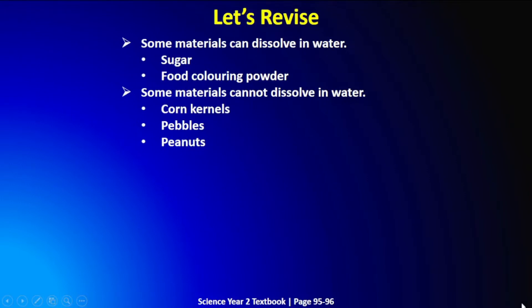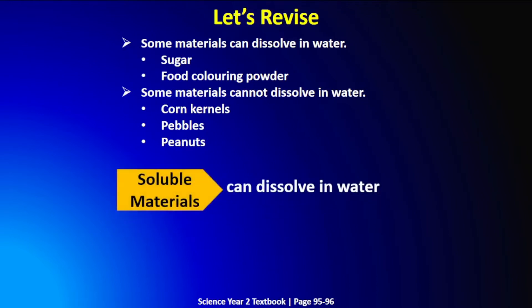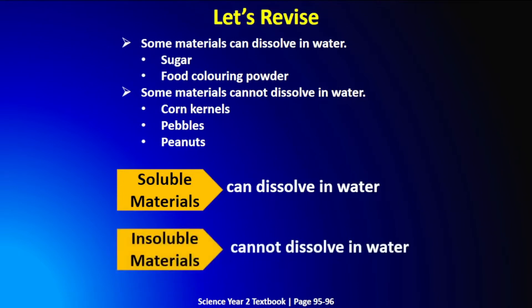Alright boys and girls, before we go straight to the investigation, let us do some revision on a previous lesson. Previously we learned that some materials can dissolve in water, such as sugar and food coloring powder. Meanwhile, some materials cannot dissolve in water, for example corn kernels, pebbles, and peanut. We also learned that soluble materials are materials that can dissolve in water, and insoluble materials are materials that cannot dissolve in water.